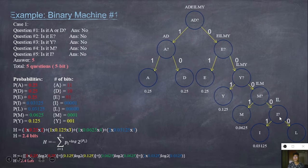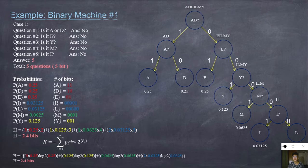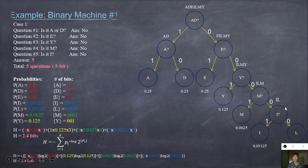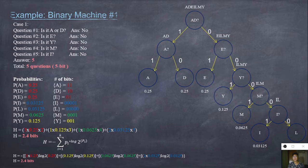The answer is I. Is it I? For yes, we predicted I. And for no, we predicted N. The total number of questions is 5, so it has 5 bits.